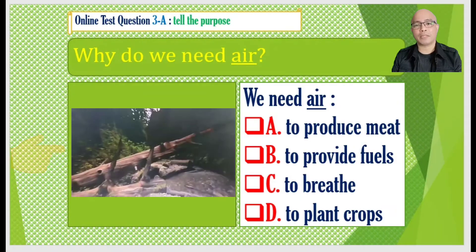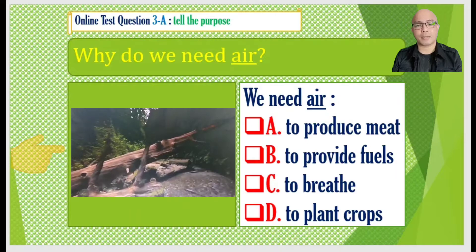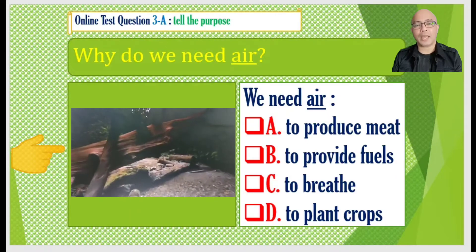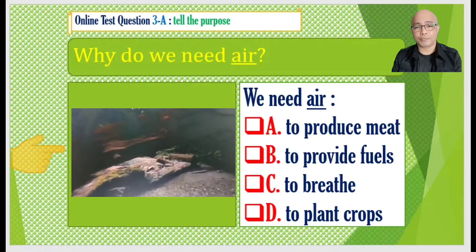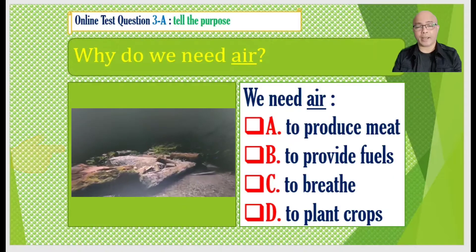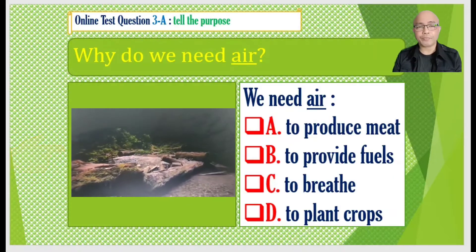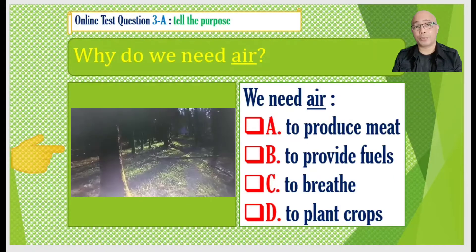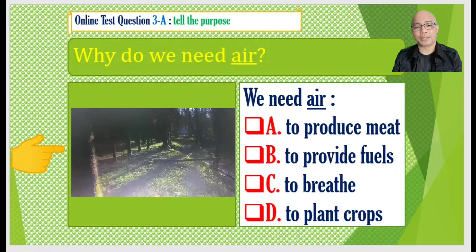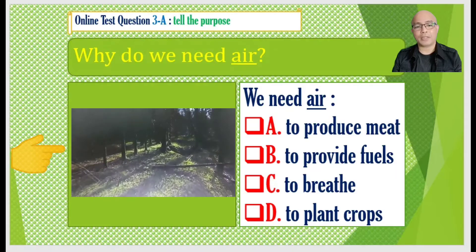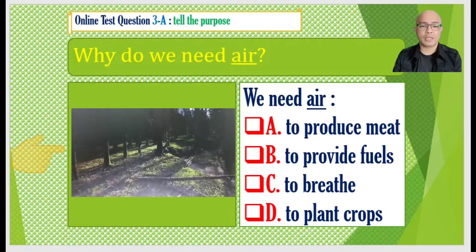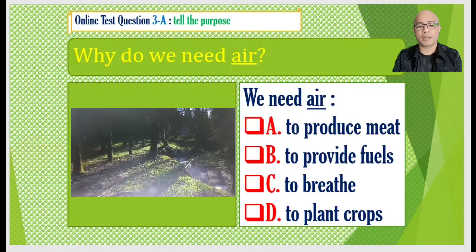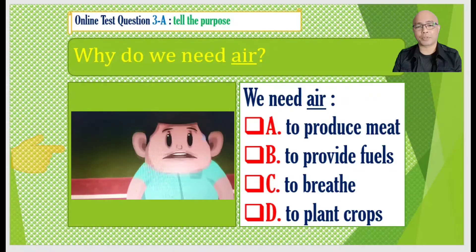Practice test number three: Why do we need air? We need air — A to produce meat, B to provide fuels, C to breathe, D to plant crops.